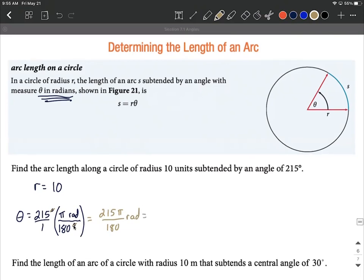Now we can reduce this down slightly. These are multiples of five, numerator and denominator, so we can say 43π over 36 radians. We've converted theta from degrees to radians.